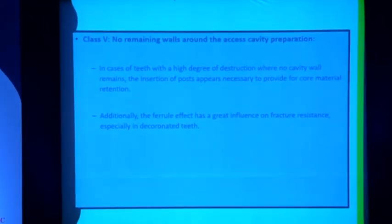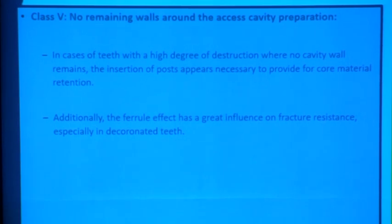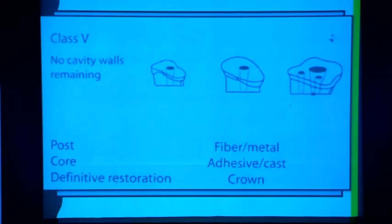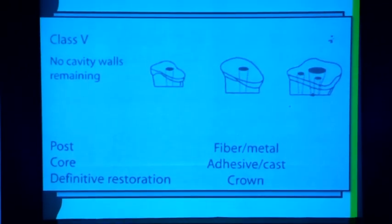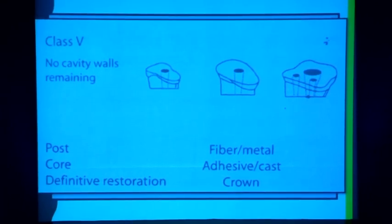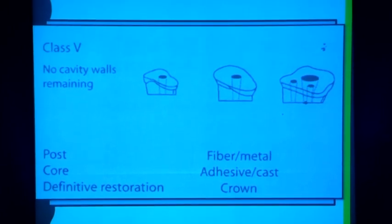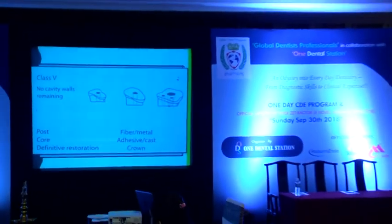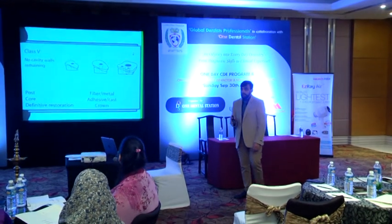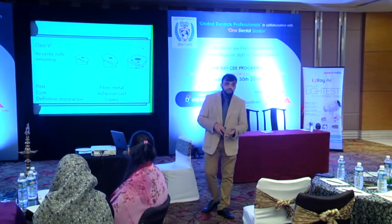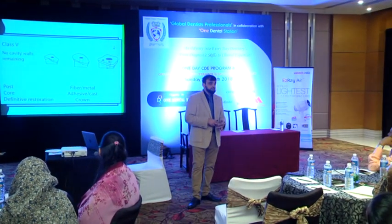Then we have Class 5 — the most difficult teeth to restore — where we don't have any tooth walls remaining around the access cavity. Whether it is an anterior tooth, a premolar, or a molar, you have to place a post; it is compulsory. And it has to be a very rigid post. In such cases, we cannot do a fiber post or a metal post — we have to do a cast post.